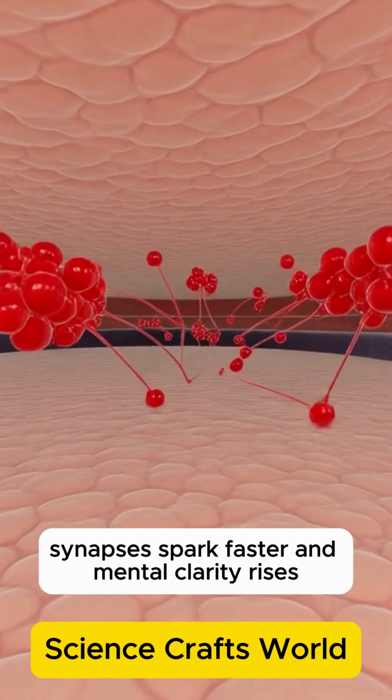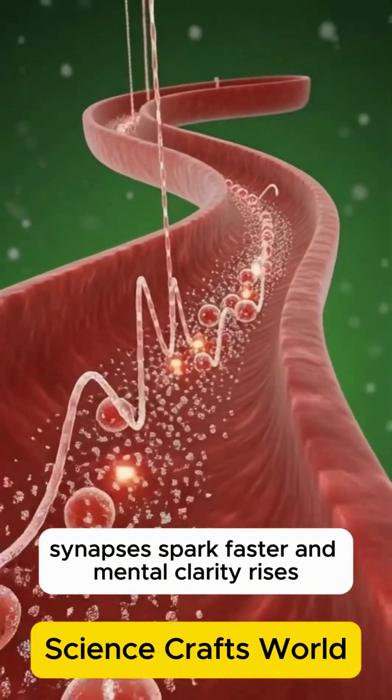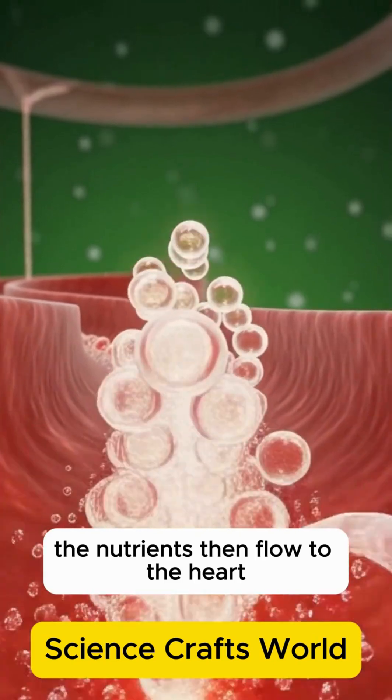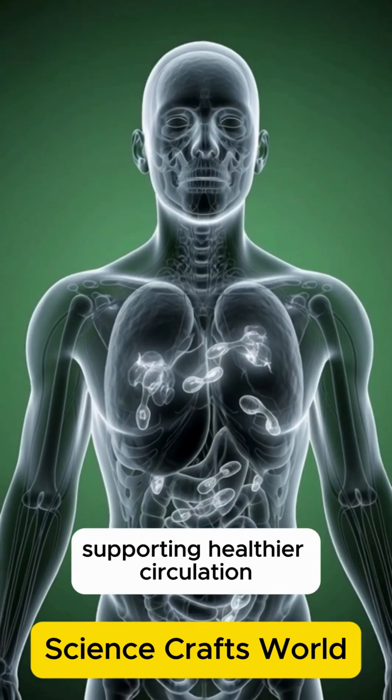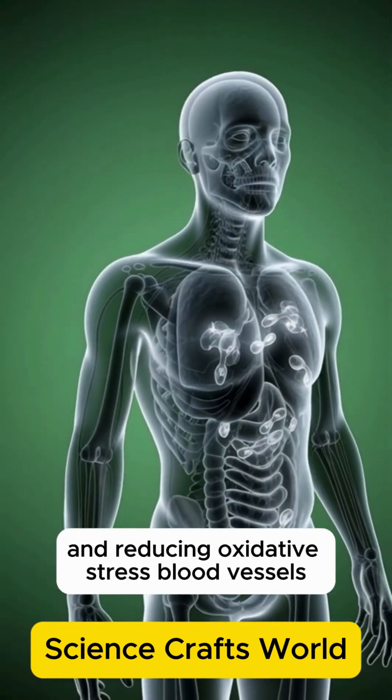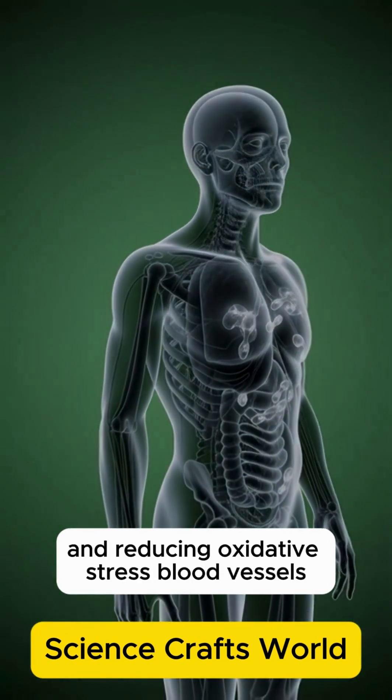Neurons fire brighter, synapses spark faster, and mental clarity rises. The nutrients then flow to the heart, supporting healthier circulation and reducing oxidative stress.